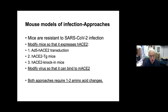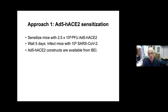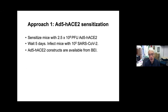Both approaches really require just very few amino acid changes in either the ACE2 receptor or in the virus itself, which makes it so it can now bind to mouse ACE2. I'm going to spend most of my time on the adenovirus human ACE2 sensitization system, because we worked with this mostly over the last month while we were getting the other systems up and running. You can take any mouse and sensitize it by transduction with adenovirus 5 expressing human ACE2.